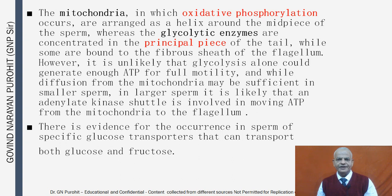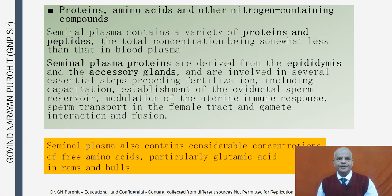Diffusion from mitochondria may be sufficient in smaller sperm, but in larger sperm an adenylate kinase shuttle is likely involved in moving ATP from the mitochondria to the flagellum. There is evidence for specific glucose transporters in sperm that can transport both glucose and fructose. Proteins, amino acids, and other nitrogen-containing compounds are also present in seminal plasma, with total protein concentration somewhat less than in blood plasma.